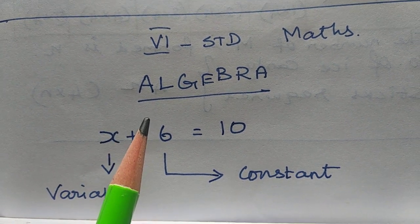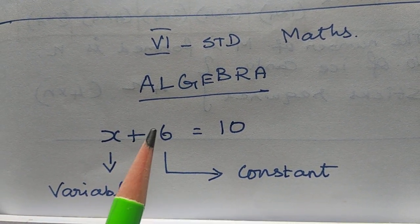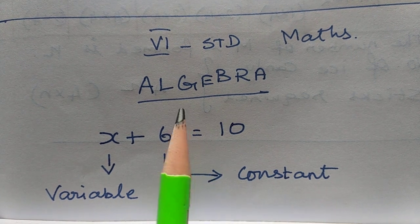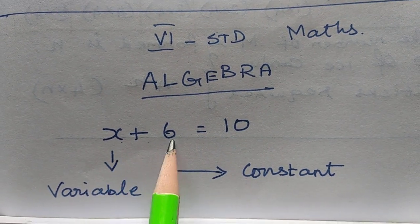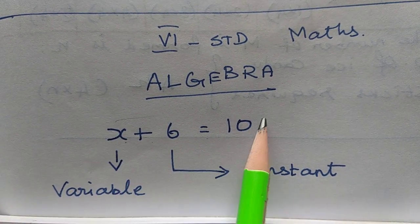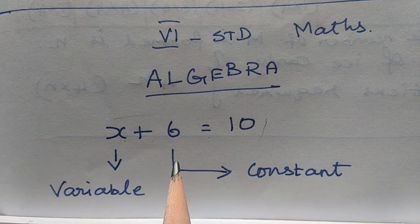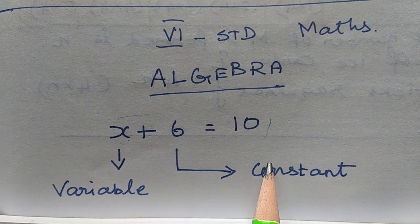Hi students, now you go to 6th standard maths algebra. Already in 5th standard you know algebra how to write. x plus 6 equal to 10. This is one equation. x is a variable. 6 is a constant.